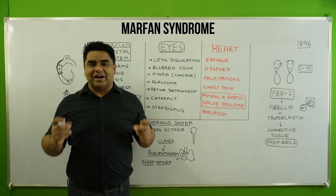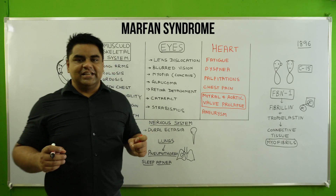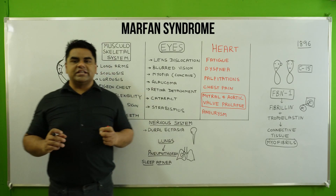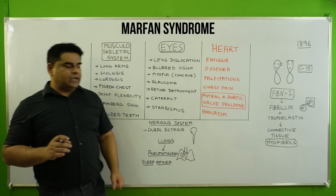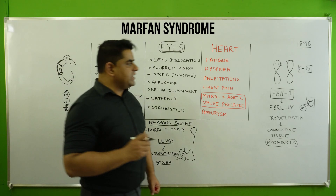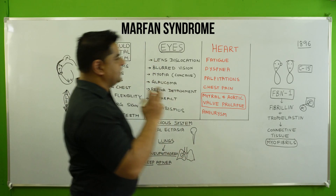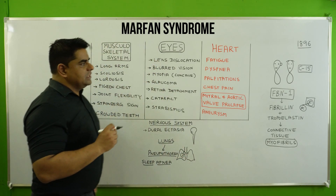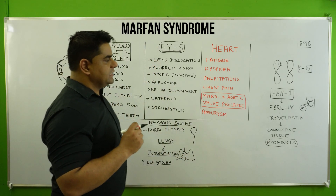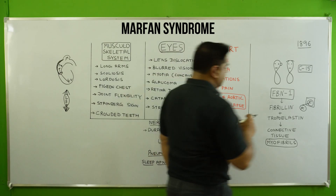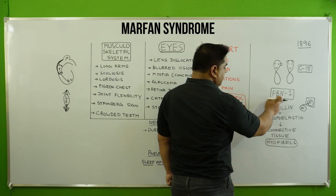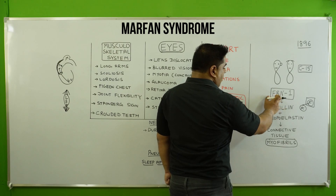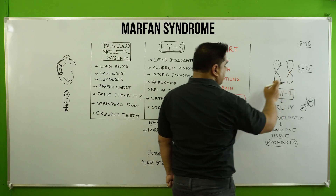Hello Medical and Nursing Masters. Today we are going to discuss one of the very important genetic conditions — Marfan syndrome — in which there is a defect or mutation in the gene FBN1, which is located on chromosome number 15.